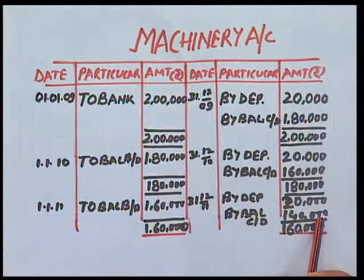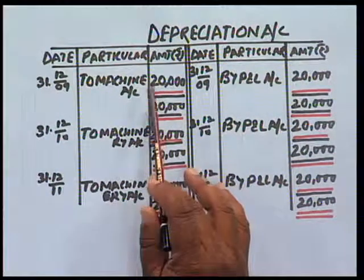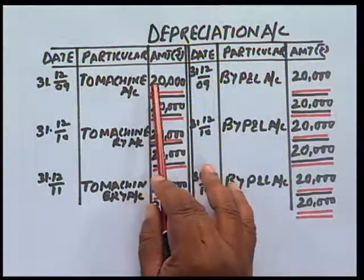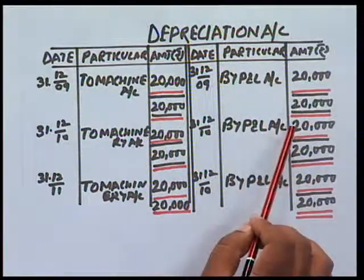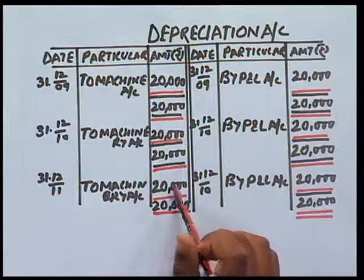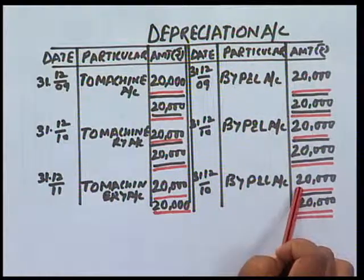So under this method, when we transfer the depreciation directly to the asset account, the value of the asset declines every year by the amount of depreciation. In the depreciation account, every year 20,000 rupees is charged as depreciation and then transferred to the profit and loss account. These are the accounts we prepare when depreciation is directly charged to the asset account.